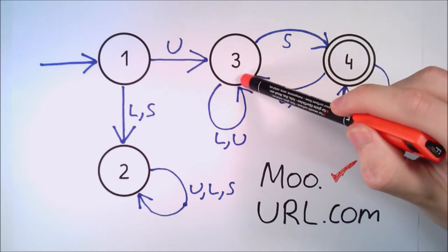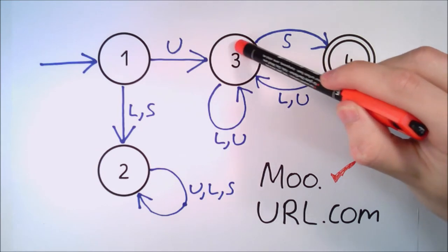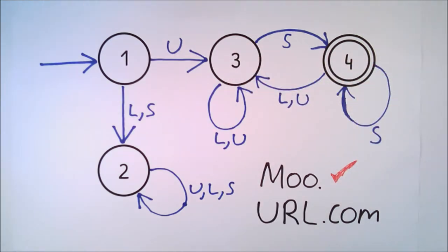This time we are not at an accepting state, so even though we passed through the accepting state, the automaton does not accept url.com as a valid sentence. However, with the addition of one more full stop, we can make this into a sentence accepted by the automaton.